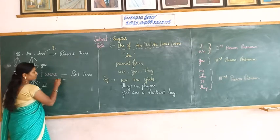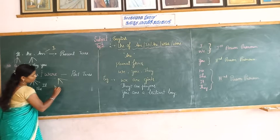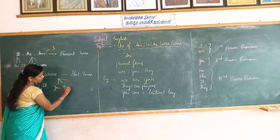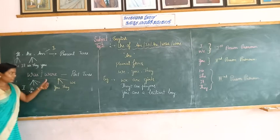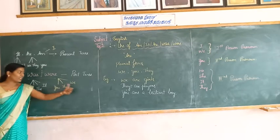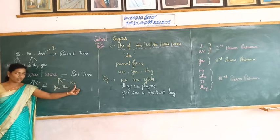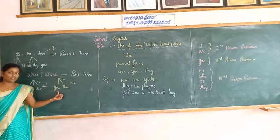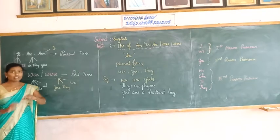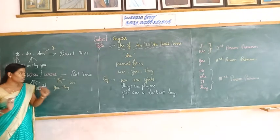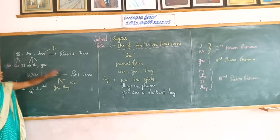'Were' is used with you, they, we. We is the first person pronoun, you is the second person pronoun, and they is the third person pronoun. We use 'was' and 'were' in past tense form.